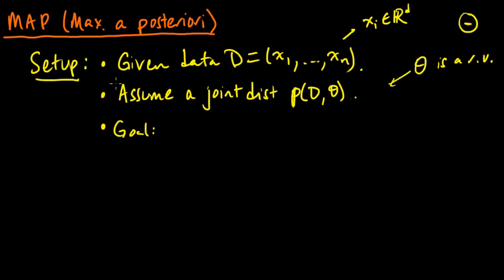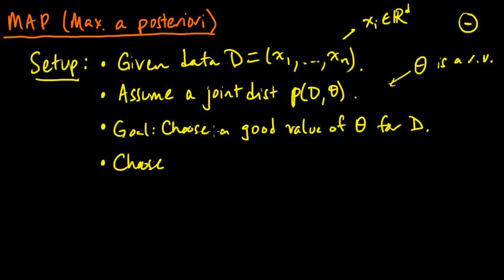So we assume this joint distribution. And our goal in computing and in finding a map estimate is to choose some value of theta. So we want to choose a good, in some sense, value of theta for d. Something which is good for our data. Something which we think that the data may come from. And we choose under the map. So the map says, so this is our goal. The map says to achieve this goal, what you should do is choose the following quantity. We choose a quantity theta map that satisfies that it is a maximum over thetas of the probability of theta given the data. And this is the posterior distribution on theta given the data.